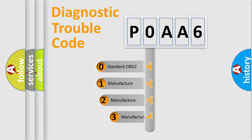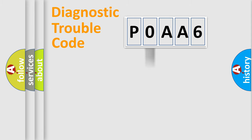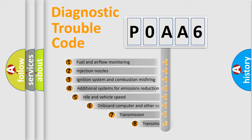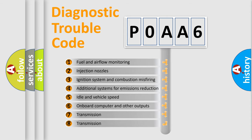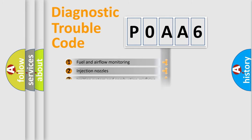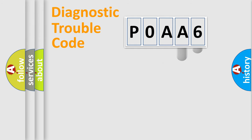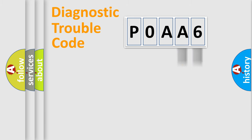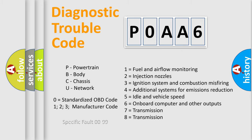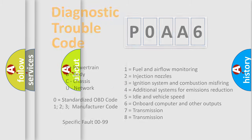If the second character is expressed as zero, it is a standardized error. In the case of numbers 1, 2, or 3, it is a more specific expression of a car-specific error. The third character specifies a subset of errors. This distribution is valid only for the standardized DTC code, and only the last two characters define the specific fault of the group. Such a division is valid only if the second character code is expressed by the number zero.